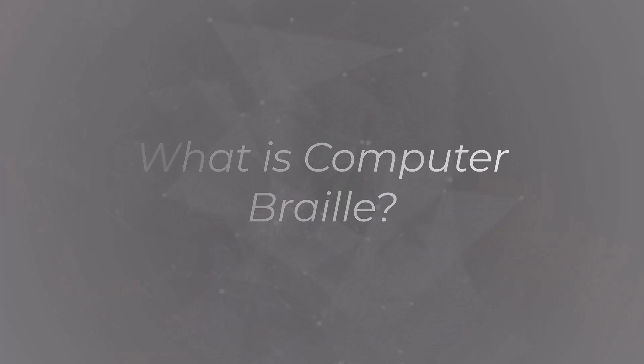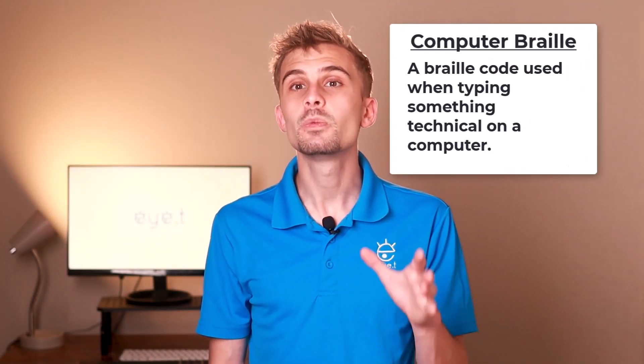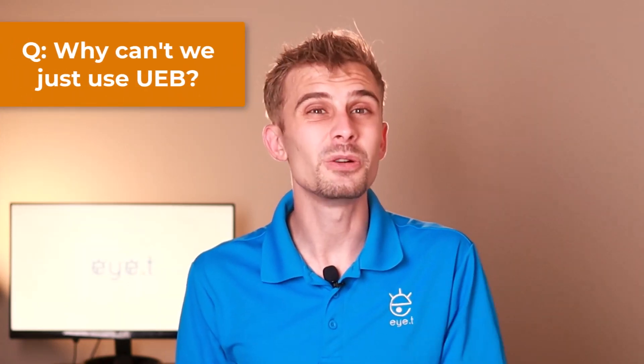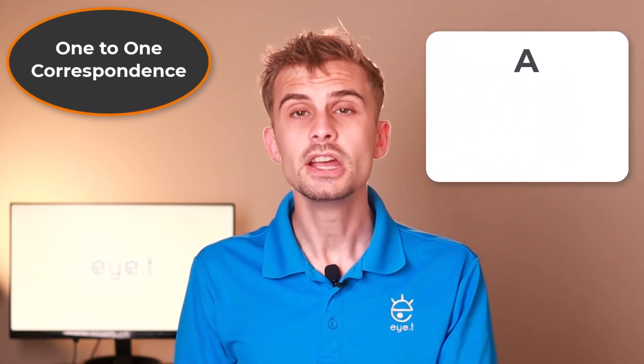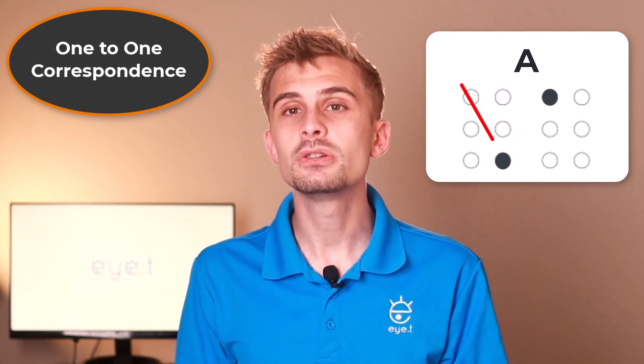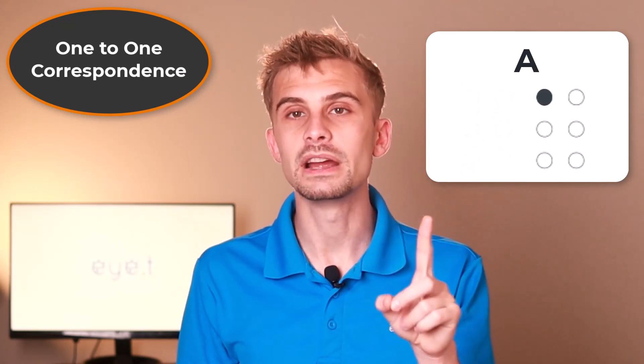What is computer braille? Well, computer braille is exactly what it sounds like — it's a braille code used when typing something technical, usually for a computer. Why can't we just use regular old unified English braille when typing on a computer? The benefit of computer braille is that there is a one-to-one correspondence, meaning each and every braille cell corresponds to one print symbol. So when you write a capital A, you won't be typing capital indicator then A — in computer braille, that capital A will be one braille symbol.